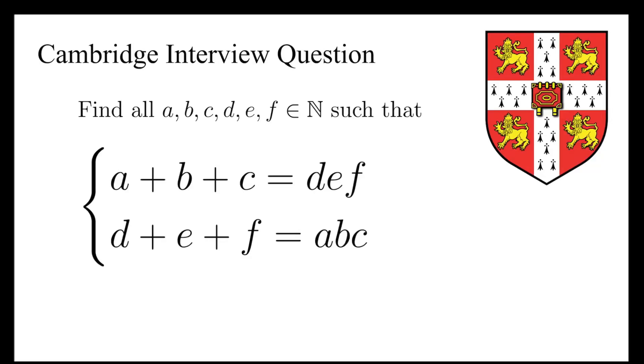In this video, we are going to find all natural numbers a, b, c, d, e, f such that we satisfy both a plus b plus c equals def, and d plus e plus f equals abc.